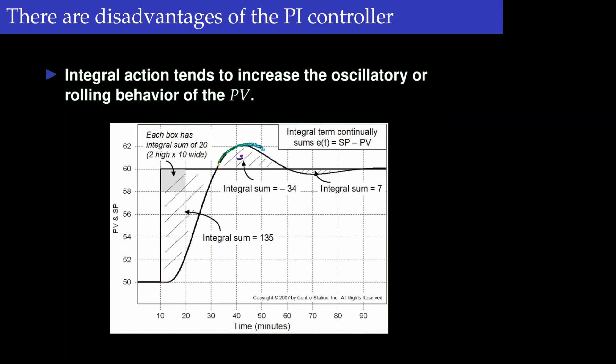When you plot the error, you see a negative area because the error is defined as set point minus output. Only when the negative area accumulates does the integral action start to decrease. This is why integral action introduces oscillation in the process variable — that is one of the disadvantages of the PI controller.